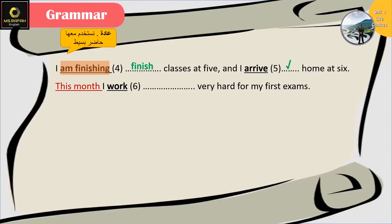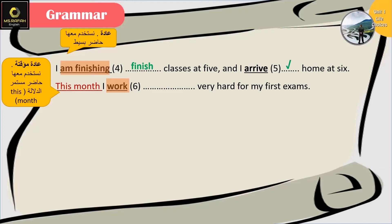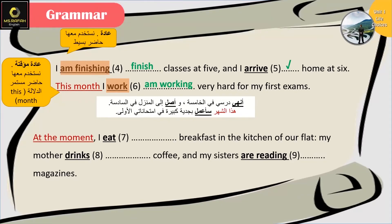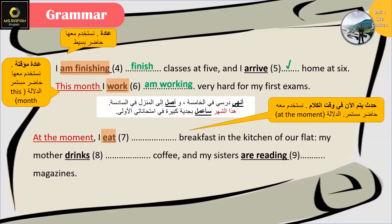I finish classes at 5 and I arrive home at 6. أنا عم بحدد الساعة اللي بخلص فيها دروسي والساعة اللي بوصل فيها على البيت، فعندنا هون عادات نستخدم حاضر بسيط. This month I work very hard for my first exams - في عنا دلالة 'this month'، في عندي شيء مختلف عن العادة فبستخدم حاضر مستمر: This month I'm working very hard for my first exams.